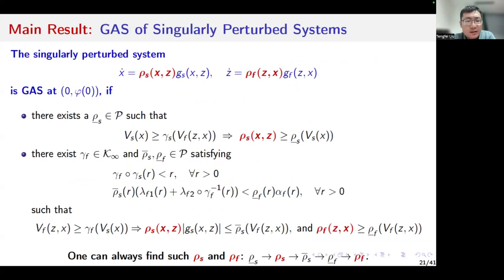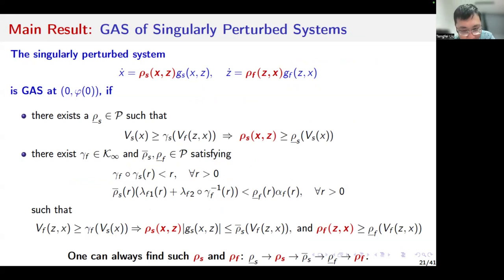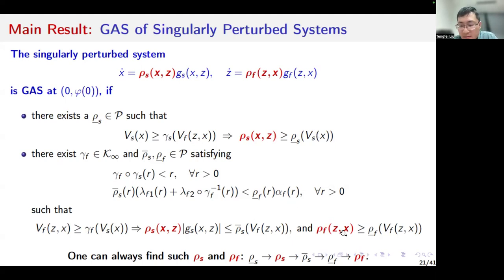Based on these assumptions, the singularly perturbed system can be rendered globally asymptotically stable at the expected equilibrium (0, phi(0)), if certain conditions are satisfied. I won't go into all the technical details, but these conditions are intuitive. Basically, one condition means that rhoS should have a positive-valued lower bound. If rhoS is zero, then the stability of the reduced order subsystem disappears. So this condition is quite natural. Another condition means that the perturbation function for the faster subsystem should be large enough, with a lower bound larger than the upper bound of the perturbation function of the slow dynamics.